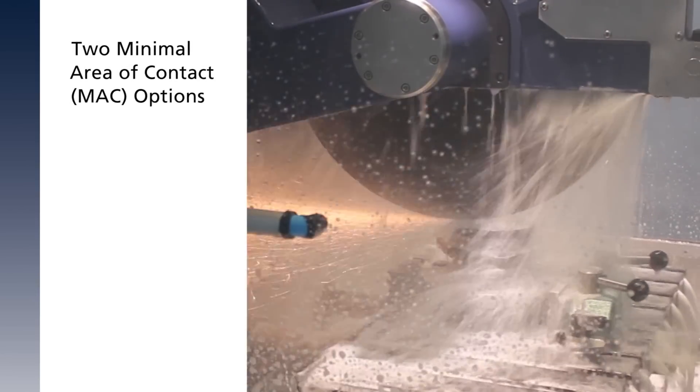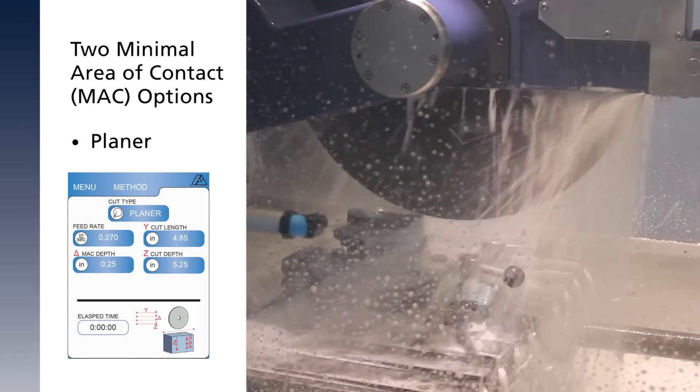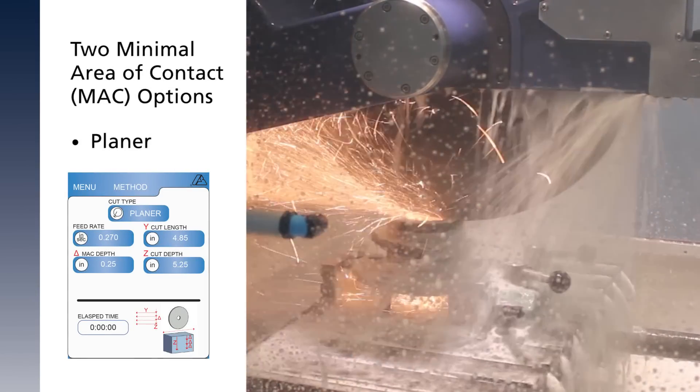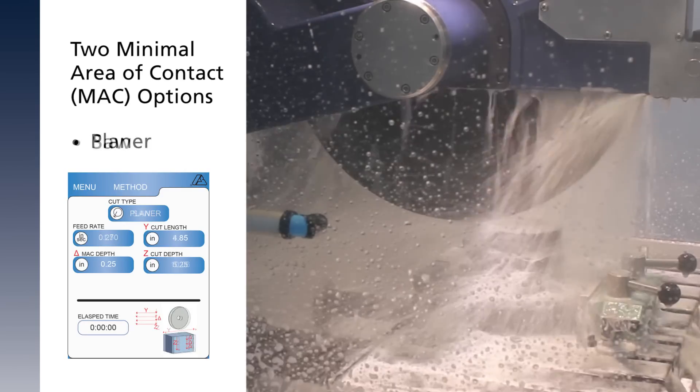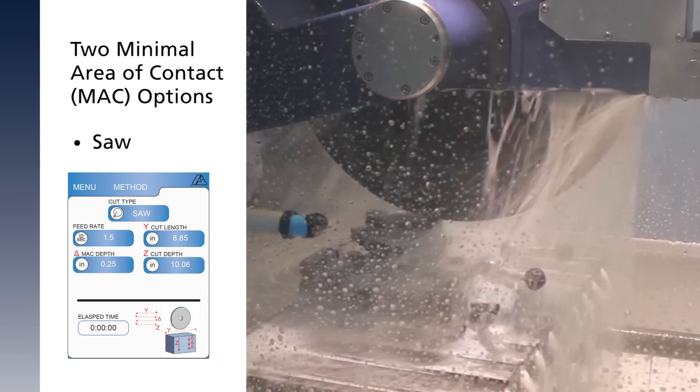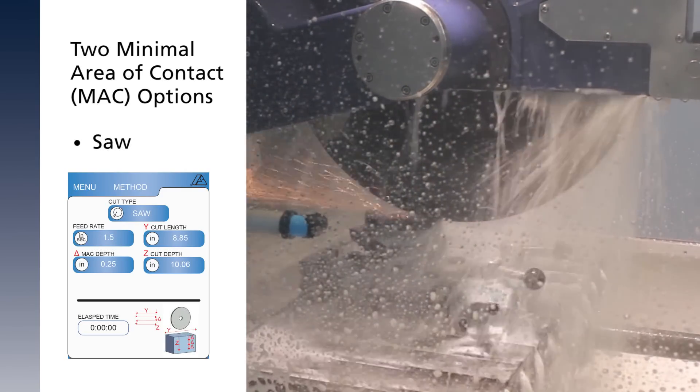For larger difficult cuts, select one of the minimal contact area methods: planer or saw. This will enable quicker sectioning.